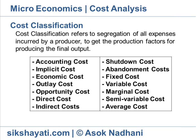Implicit cost represents the cost of factors owned by the promoter himself and employed in his own business. For example, interest on the entrepreneur's capital, his own salary, etc. Economic cost is the sum of explicit and implicit cost. It includes costs actually incurred by a firm for purchase or hire of labor inputs and cost of supplied factors not normally recorded in the books of accounts.